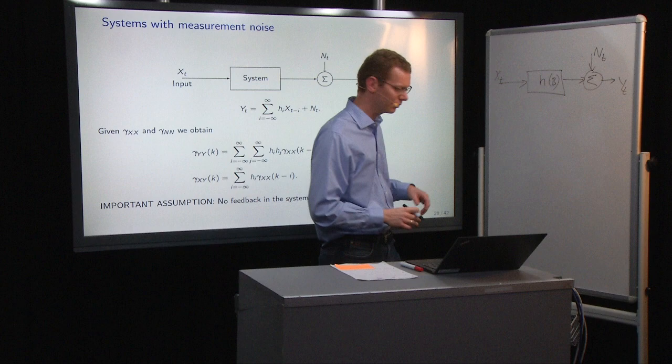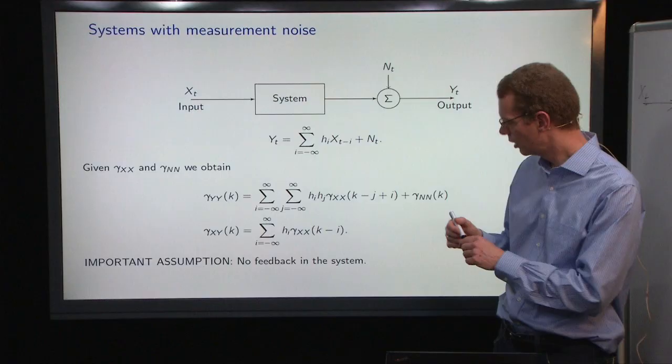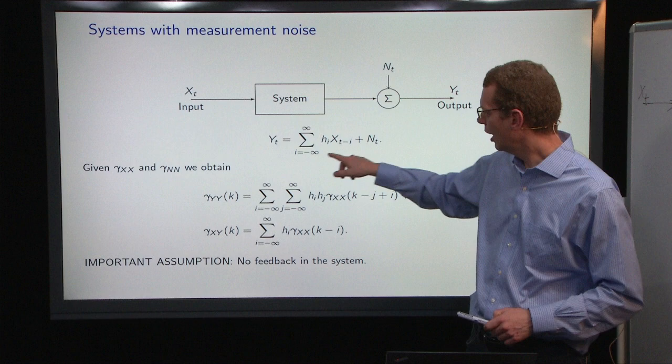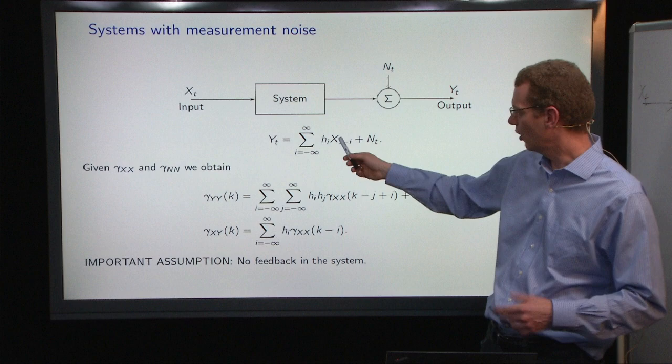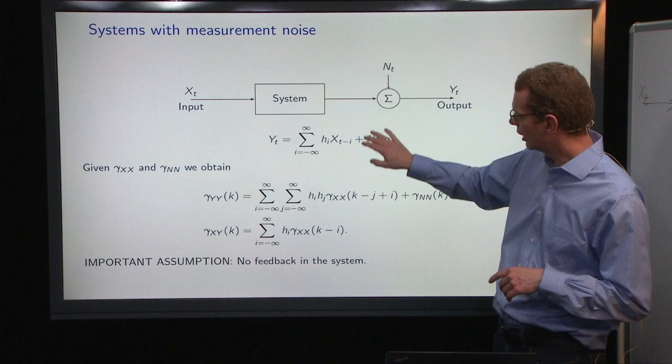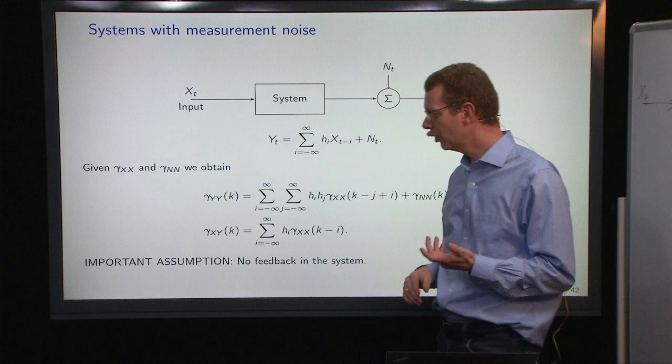We say that our system has an operator, let's just call it h of b, to give it as a transfer function. And we can write it, as we've done up here, as an infinite sum of the previous inputs, also future inputs if it's non-causal, plus the structure that you get from the noisy input here.